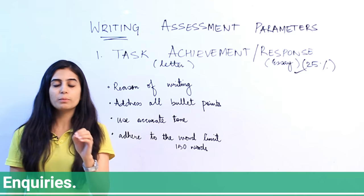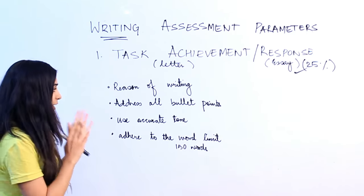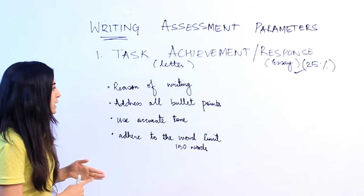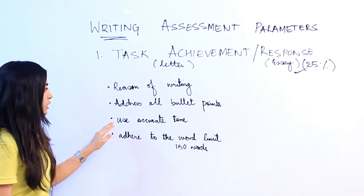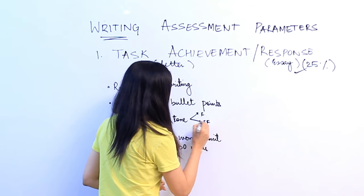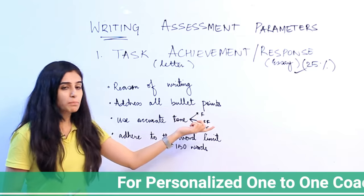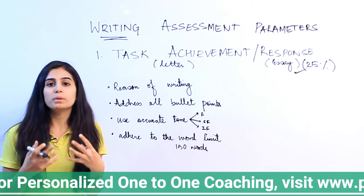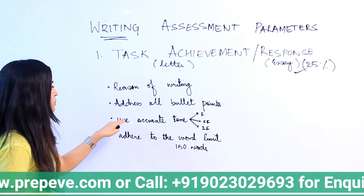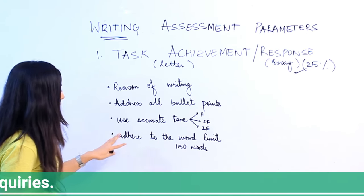Number two: addressing all bullet points. In IELTS, there are three bullet points in every letter question, and each of those three bullet points has to be addressed by you. Number three: use accurate tone. There are three types of letters — formal, semi-formal, and informal — and each has a different tone. While writing a formal letter to an official, you use formal language, not friendly or casual language as you would in an informal letter. You need to be very particular about your tone.